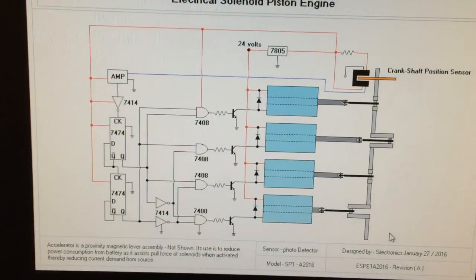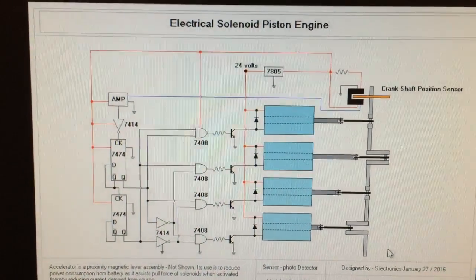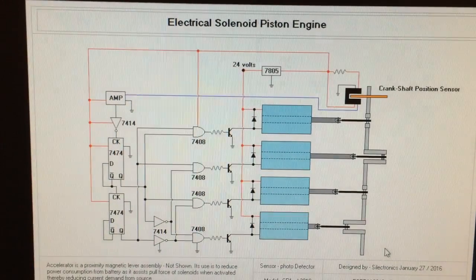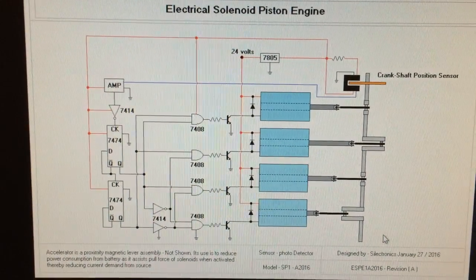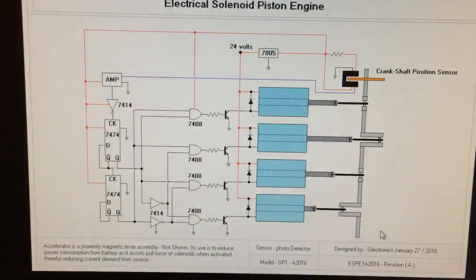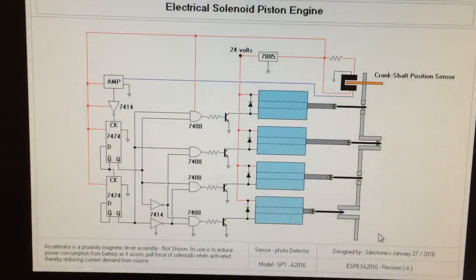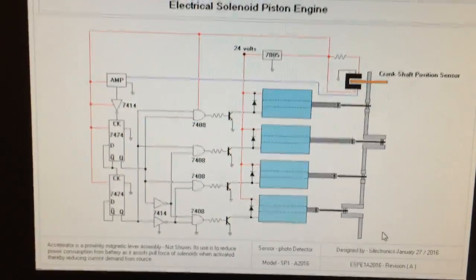But the trick for this one is you must align the crankshaft sensor in the correct position in reference to the crank position, so that when this thing starts rolling, it's sending out the signal at the proper time for each solenoid to pull in.